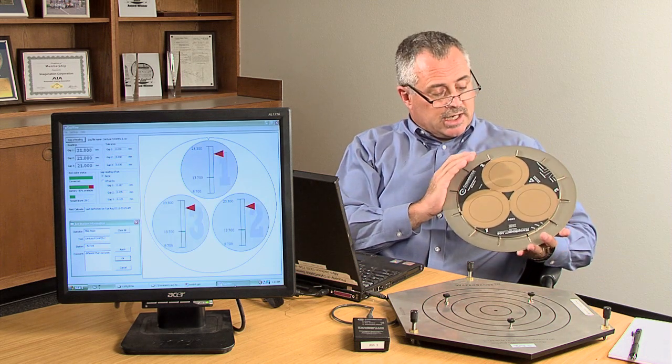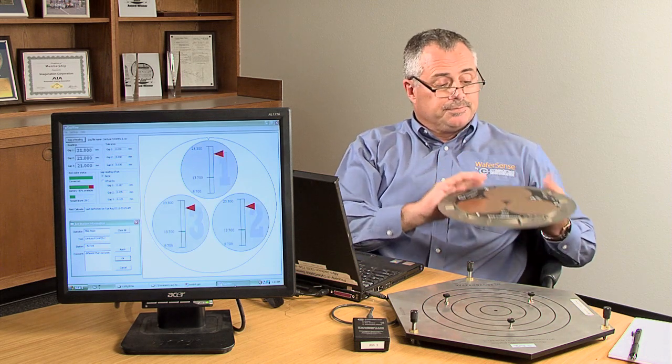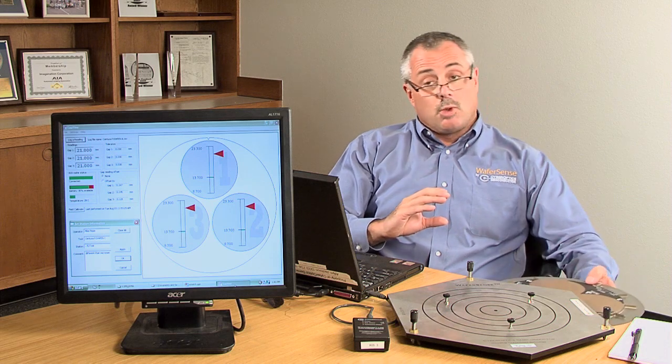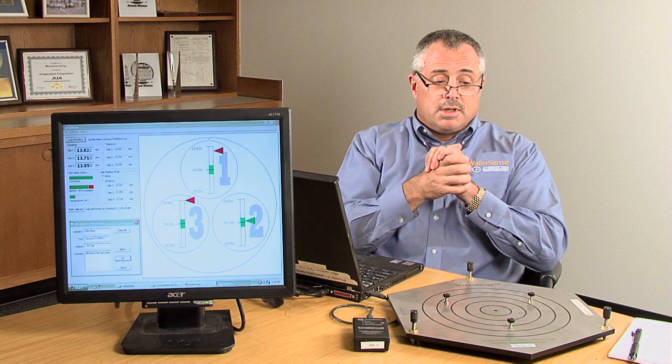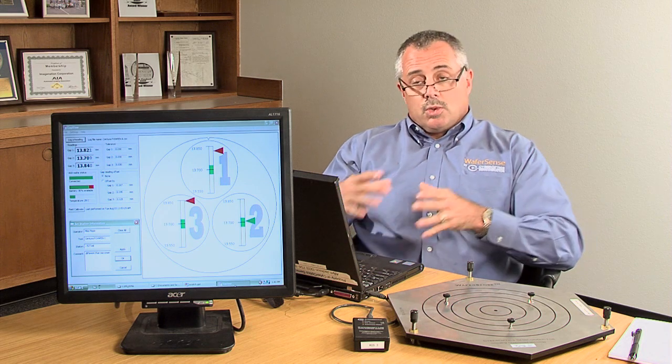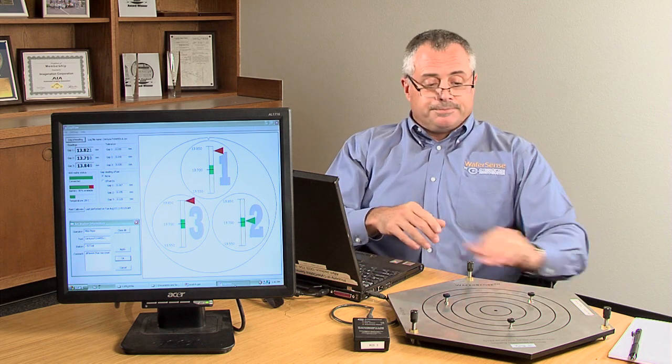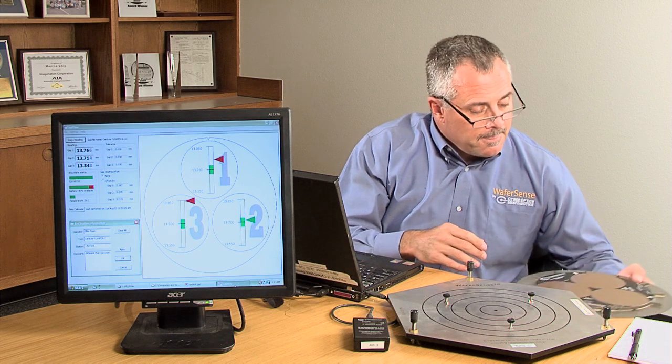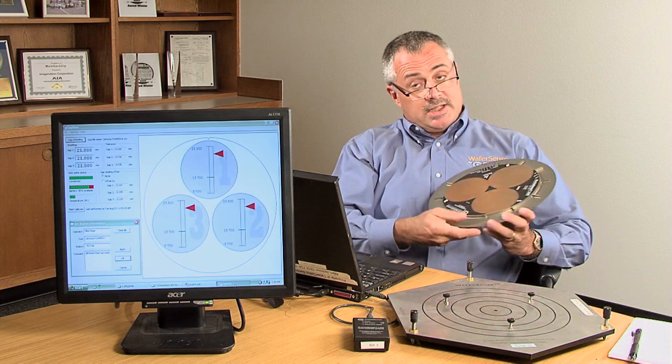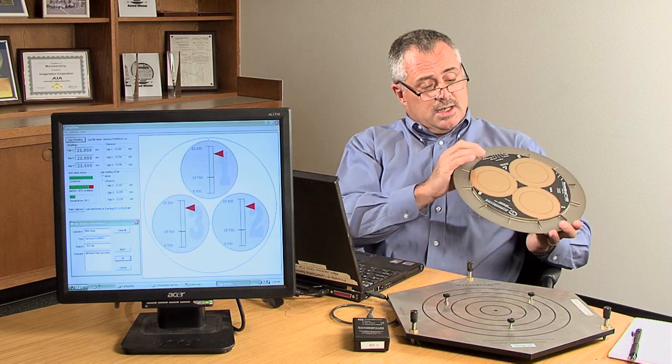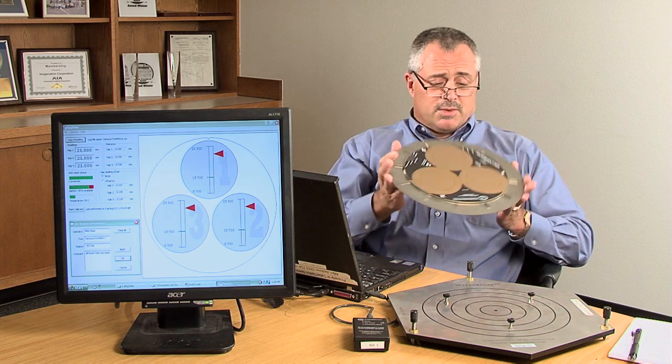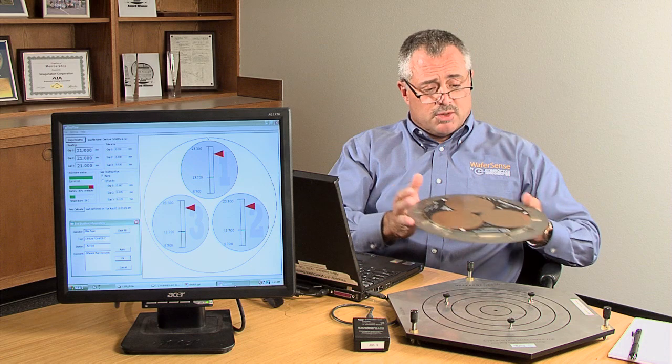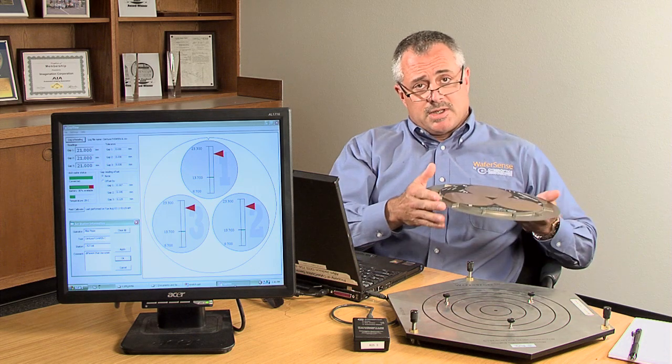AGS is accurate to one-one-thousandths of an inch. AGS will record data and is moved around the tool through the tool automation, just like a wafer. The operating temperature is 20C to 70C. The height is 7.5 millimeters, so AGS easily fits in most tools where gapping is required.